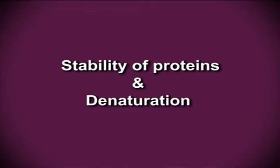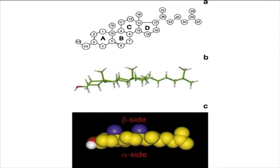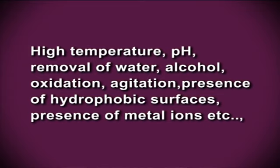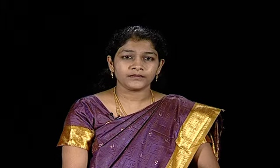Coming to the stability of proteins and denaturation. Due to the nature of weak interactions controlling the three-dimensional structure, proteins are very sensitive molecules. The term native state is used to describe the protein in its most stable natural conformation. These native states can be disrupted by a number of external stress factors including high temperature, pH, removal of water, alcohol, oxidation, agitation, presence of hydrophobic surfaces and presence of metal ions. The loss of secondary, tertiary or quaternary structure due to exposure to a stress factor is called denaturation. Denaturation causes a protein to unfold and lose its shape. Protein functions are mainly dependent on its shape; hence denatured proteins lose their ability to function properly. In addition, proteins can also form aggregates under certain stress conditions.